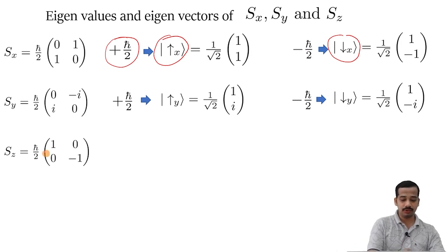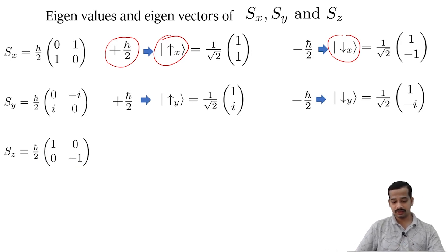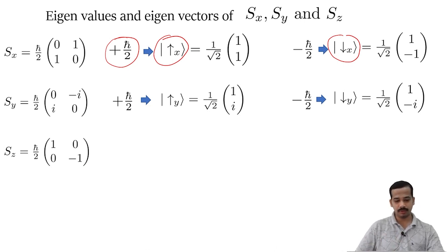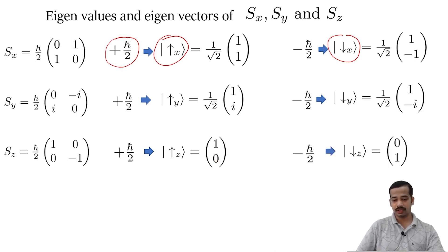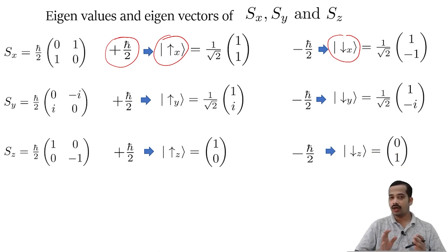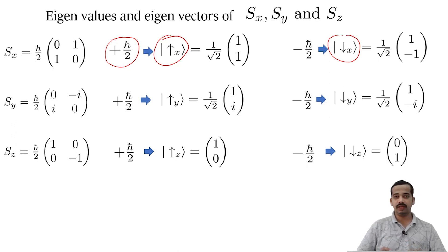Similarly, the S-z matrix is (h-bar by 2) times [[1,0],[0,minus1]], a diagonal matrix. Its eigenvalues are also plus h-bar by 2 and minus h-bar by 2. Corresponding to plus h-bar by 2, eigenvector spin-up-z equals [1, 0]. Corresponding to minus h-bar by 2, eigenvector spin-down-z equals [0, 1]. You have to remember all of these to solve any problem related to a spin-half system.